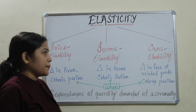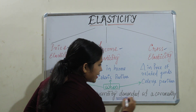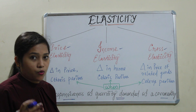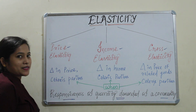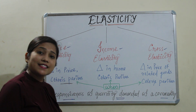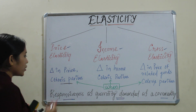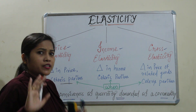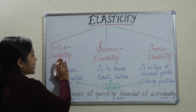What are they? The common thing is the responsiveness — the responsiveness of quantity demanded of a commodity. That means how the demand of a commodity responds when there is a change in price, ceteris paribus — that is, keeping other things constant. When other factors like income, price of related goods, money income, and population are constant, and only price changes, it is called price elasticity.